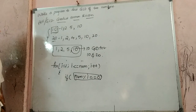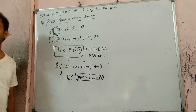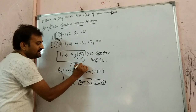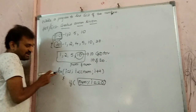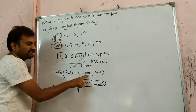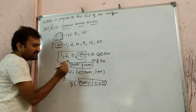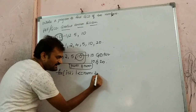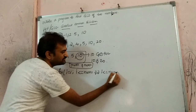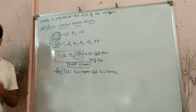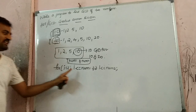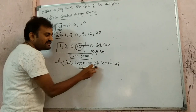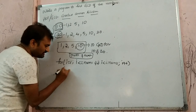Now, coming to our greatest common divisor — how many numbers do you have? Two numbers. So I will take two numbers as num1 and num2. When writing for one number, we write for i equal to 1, i less than or equal to num, i++. But when I say I have two numbers, then how many conditions will I have? Two conditions: i less than or equal to num1, AND i less than or equal to num2. So we write i less than or equal to num1 AND i less than or equal to num2, then i++.